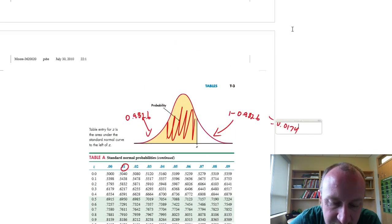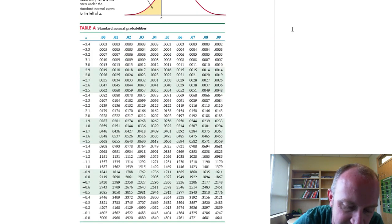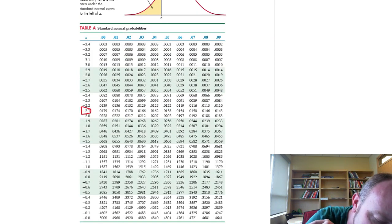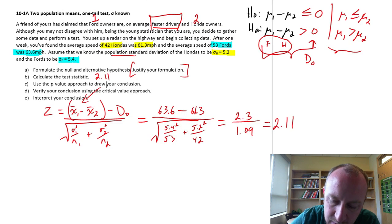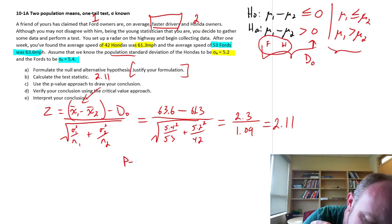Now again, we could have taken advantage of the symmetry of this distribution and looked at negative 2.11. And wouldn't you know it, we get exactly the same result, 0.0174. So I have a p-value equal to 0.0174.